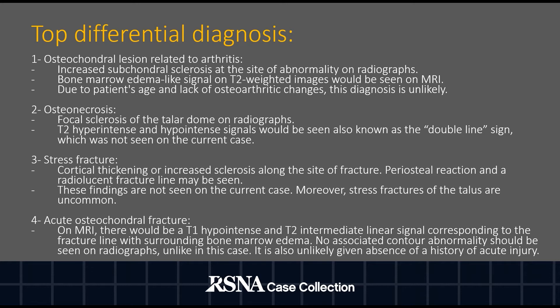For osteonecrosis, we should expect focal sclerosis of the talar dome on the radiographs. On T2-weighted imaging, linear high-intensity signals are seen adjacent to low-intensity areas indicating sclerotic bone. This is known as the double-line sign, and these findings are not seen on the current case.